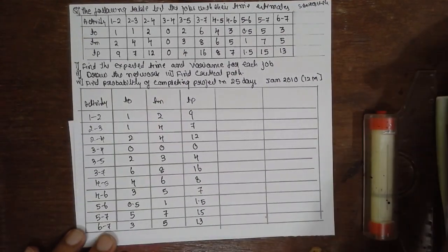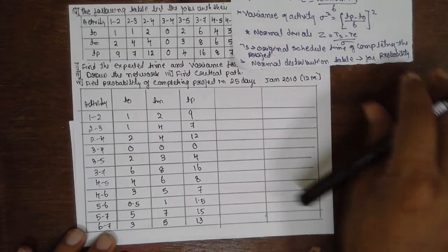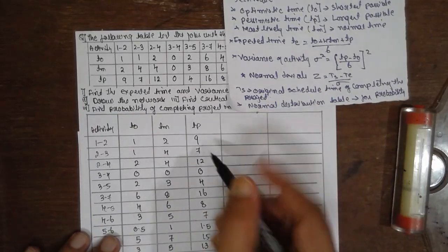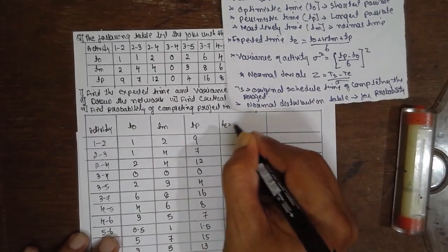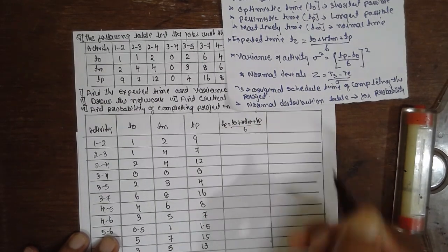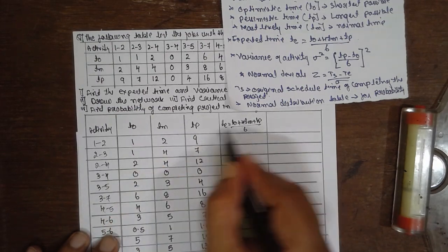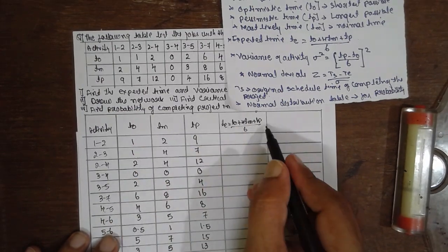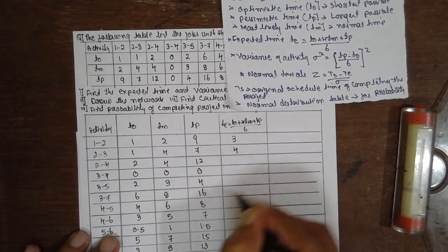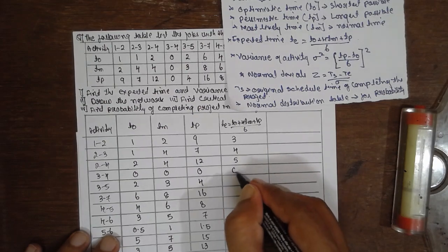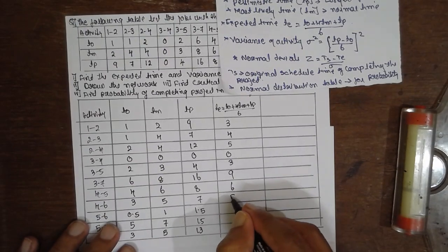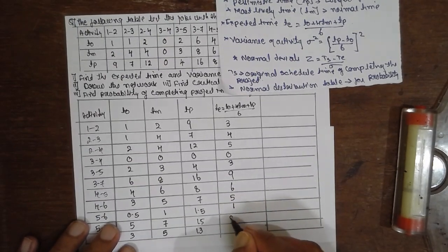Now we have to find out the TE value. TE is the expected duration. This is the formula. I am using the expected duration formula: TE equals T0 plus 4 times TM plus TP divided by 6. Now substitute these values. 1 plus 4 into 2 plus 9 divided by 6, you will get answer 3. Follow the same procedure for rest of the rows. The values are: 0, 3, 9, 6, 5, 1, 8, 6.